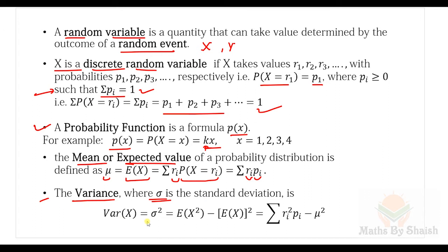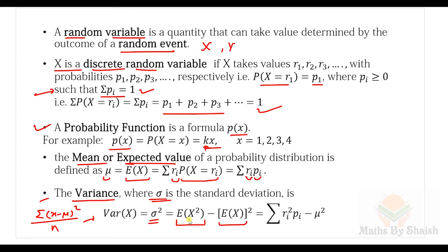The variance, where sigma is the standard deviation, is given by sigma squared. The formula is: Var(X) = E(X²) minus the square of E(X). Equivalently, variance is the average of the squared distance from the mean, which is the summation of (x minus mu) squared over n. So: Var(X) = E(X²) − [E(X)]².